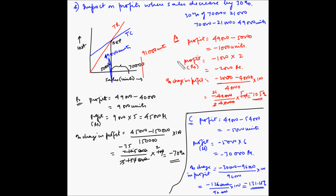If you recall, for the scenario where sales increased by 30%, the profits were also changing by the same magnitudes: 105%, 70%, and 131.25% respectively. The percentage changes in profit are symmetric — the same magnitude whether sales increase or decrease by 30%.